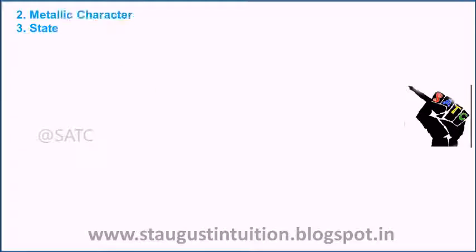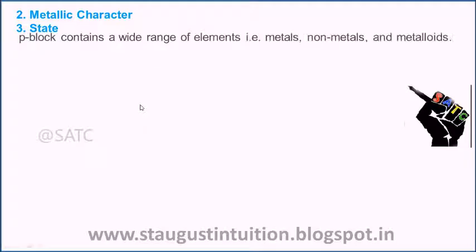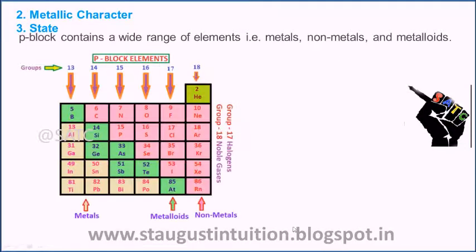The second point is metallic character and state. P-Block contains a wide range of elements: Metals, Non-metals, and Metalloids, and they exist as solids, liquids, and gases.